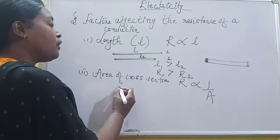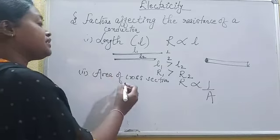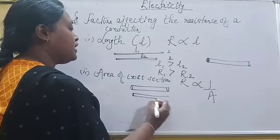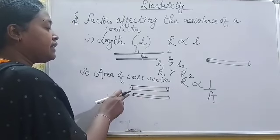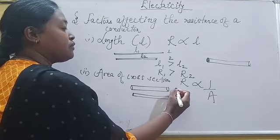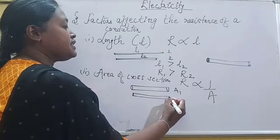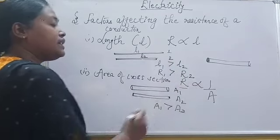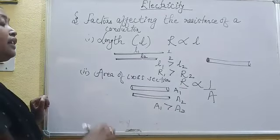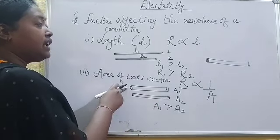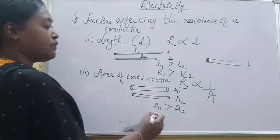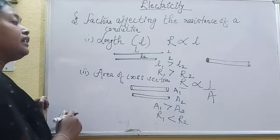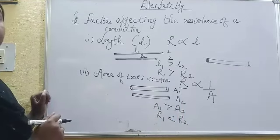If you are given two wires of the same length but different cross-sectional areas — one thicker and one thinner — the first wire has thickness greater than the second. If the area of cross-section of the first wire is A1 and the second is A2, and A1 is greater than A2, then since R is inversely proportional to area of cross-section, the resistance of the first wire will be less than the resistance of the second wire. That is, R1 is less than R2. We conclude that the thicker wire has lesser resistance than the thinner wire.